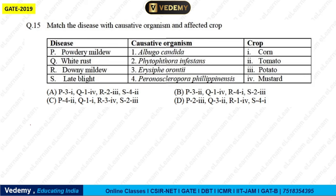The next question is quite direct — there's nothing much to explain. It gives disease names, causative organisms, and affected crops. The diseases listed are powdery mildew, white rust, downy mildew, and late blight. The answer is B. You can match and list these out, as this requires memory-based recall.